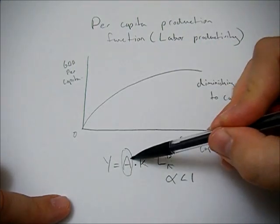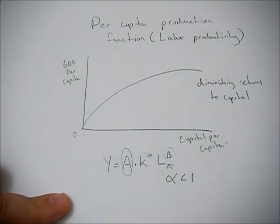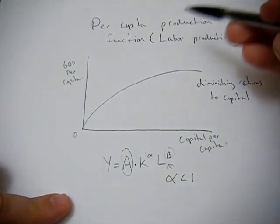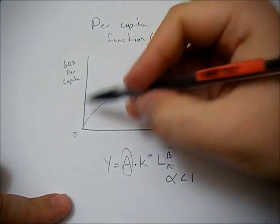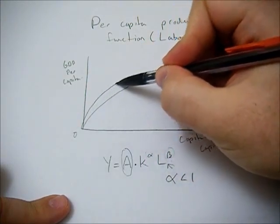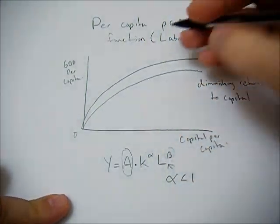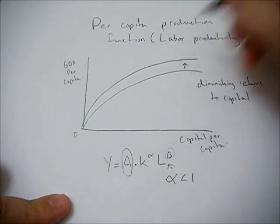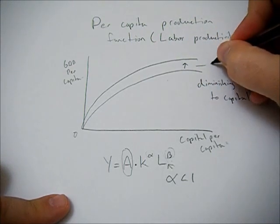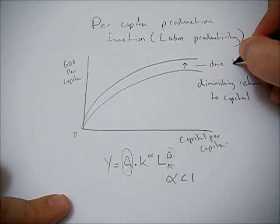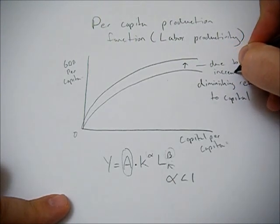But let's focus on technology. If technology increases, how do we represent that on this graph? We do it by shifting the line up. So when the line goes up, that's due to an increase in technology.